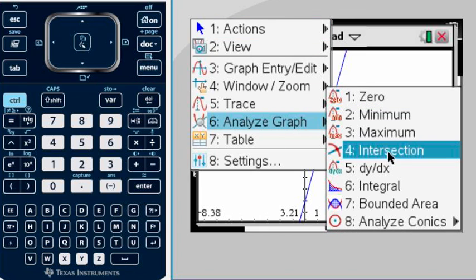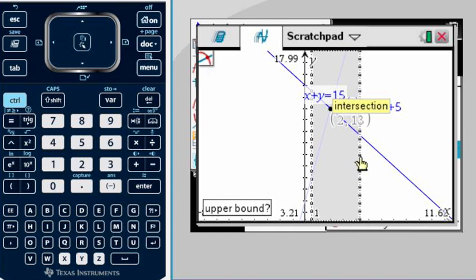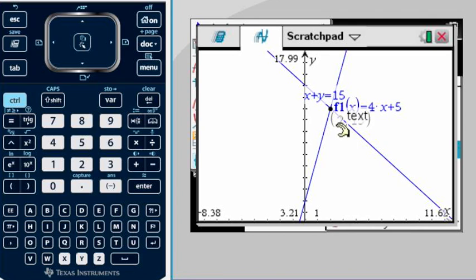Then we can do Menu, Analyze Graph, and we want the Intersection. Again, we're going to go from our lower bound or the beginning of our box before the intersection until after the intersection. Here will be our intersection point or our solution for this system.